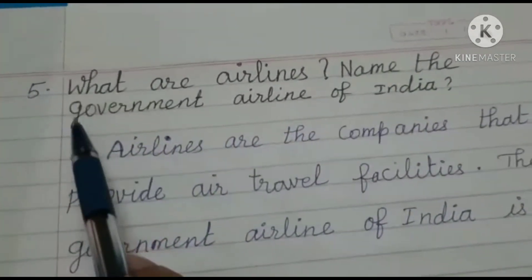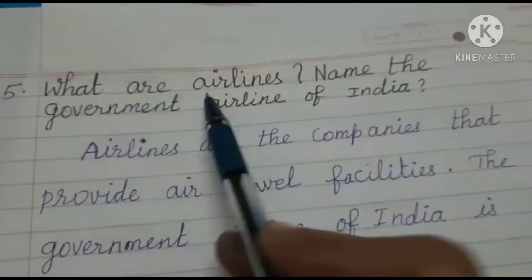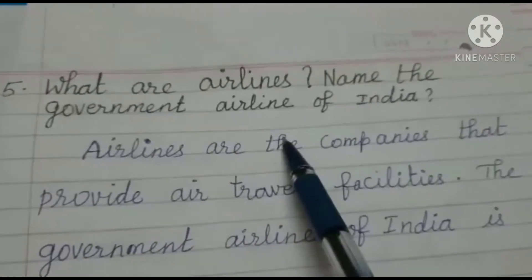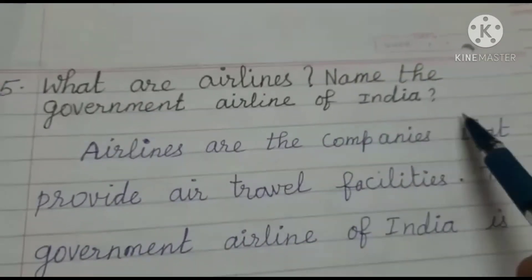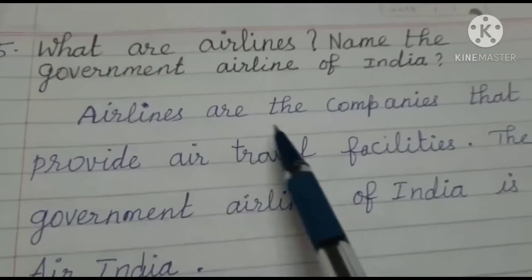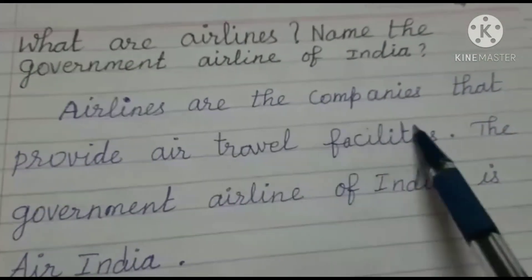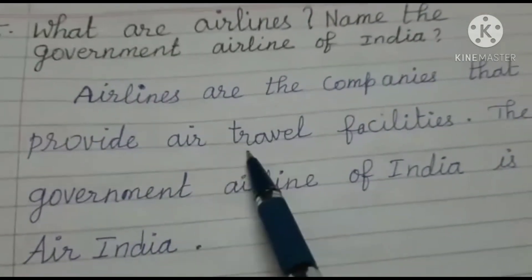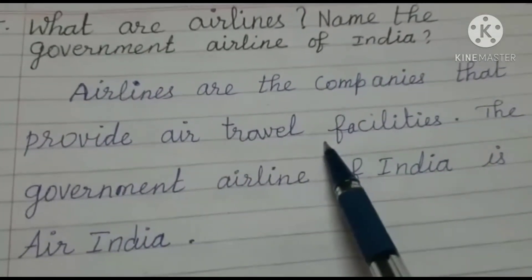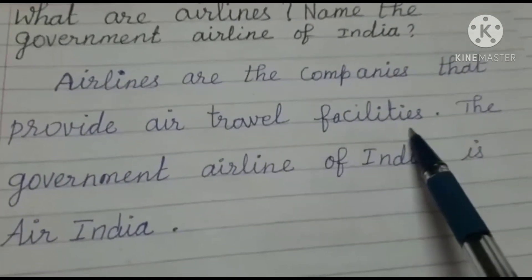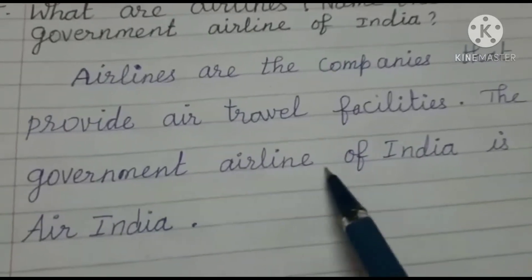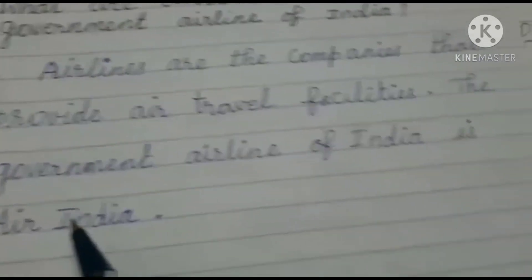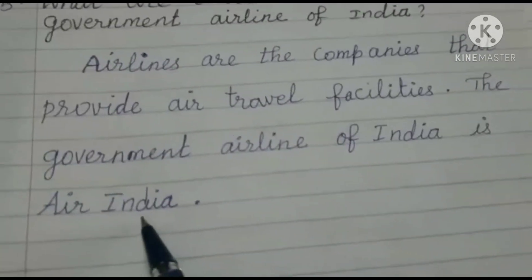5th one: What are airlines? Name the government airlines of India. Airlines are the companies that provide air travel facilities. The government airlines of India is Air India.